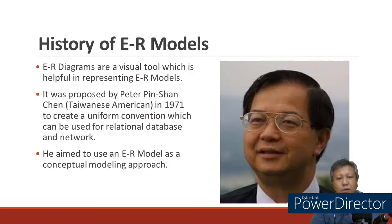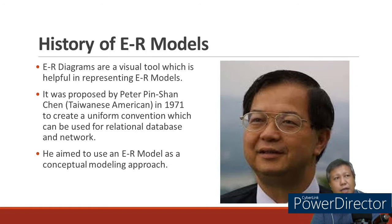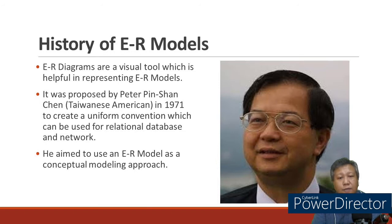What we will use is the Peter Chen notation. The Peter Chen notation is one of the earliest diagrams or notations used to model entity relationships in databases. It was proposed by Mr. Peter Pinshan Chen, a Taiwanese-American. He proposed it in 1971 to create a uniform convention which can be used for relational database and network.